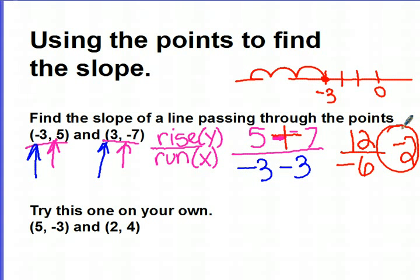At this point, I'd like you to pause the movie, copy this example that I just did for you into your notes, and use those same steps to try to find the slope of the line that goes through these points here. When you're finished, come back and start the movie again.